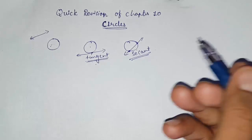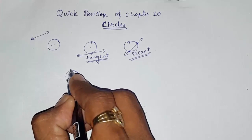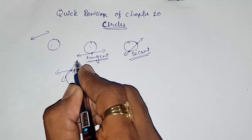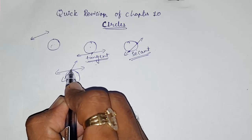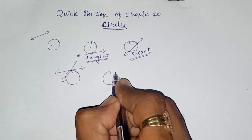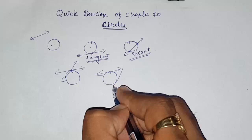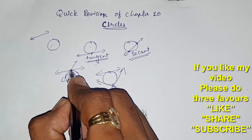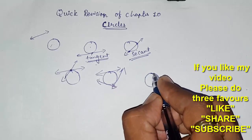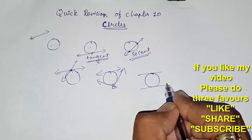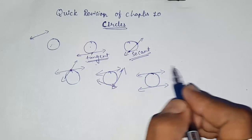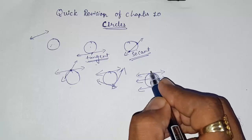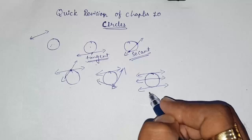How many tangents can pass through a single point on a circle? Only one tangent can pass through. If you try to draw more, the line becomes a secant. To a circle as a whole, infinitely many tangents can be drawn. However, the maximum number of parallel tangents you can draw to a circle is only two — one on each side. Any additional parallel line would become a secant.